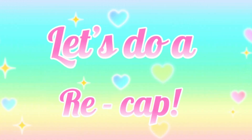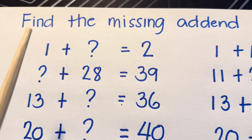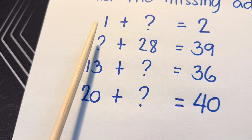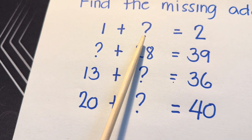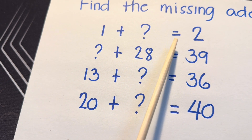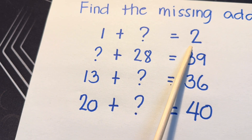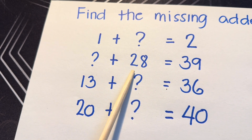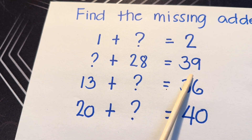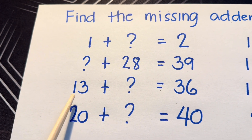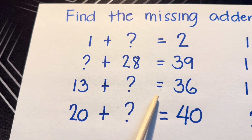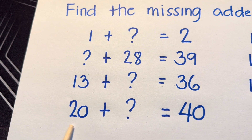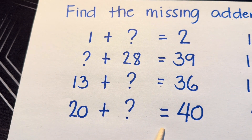Now, let's do a recap! Join me and let's all find the missing addend. 1 plus what is equals to 2. Next: what plus 28 is equals to 39. Next question: 13 plus what is equals to 36. Lastly: 20 plus what is equals to 40.